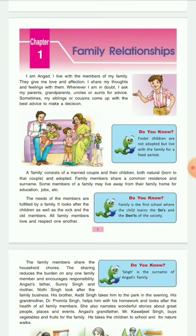We all know that family is a group of two or more people who are connected by love and kinship. It consists of a married couple and their children, both natural and adopted. Family also implies common residence for all its members.